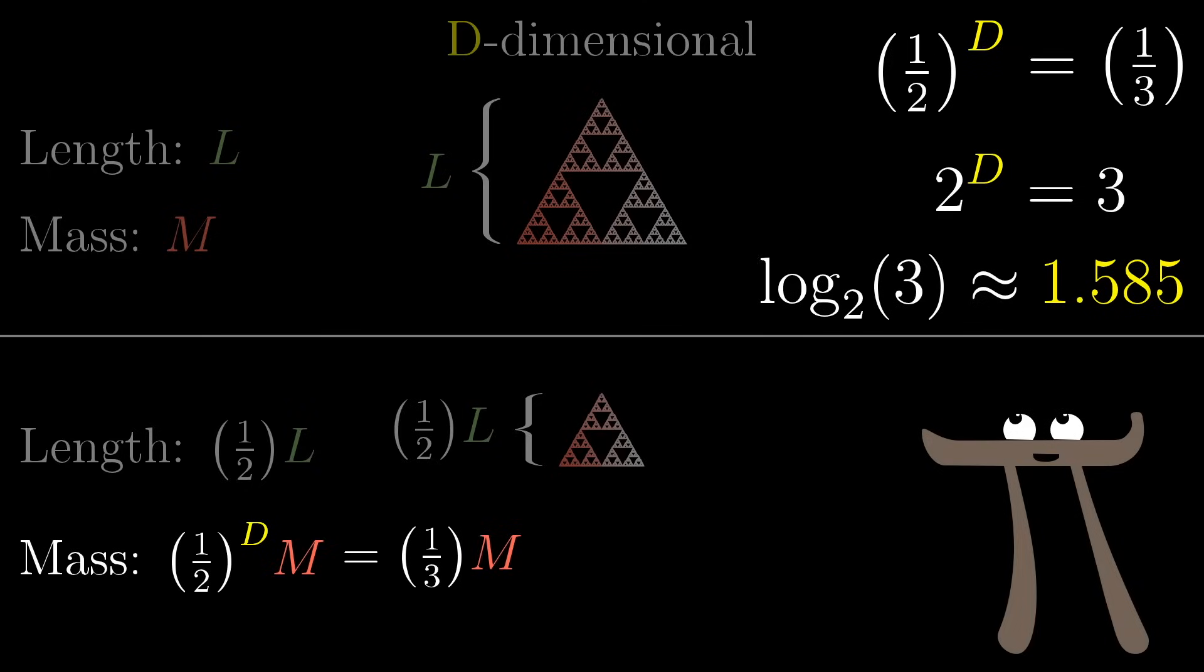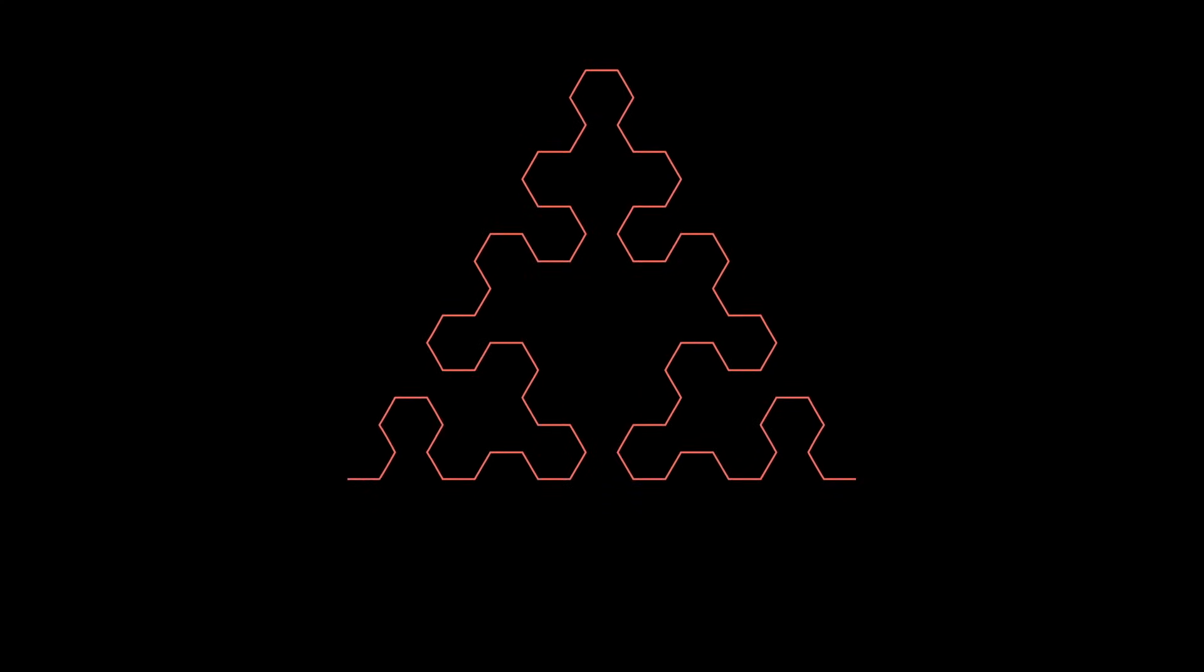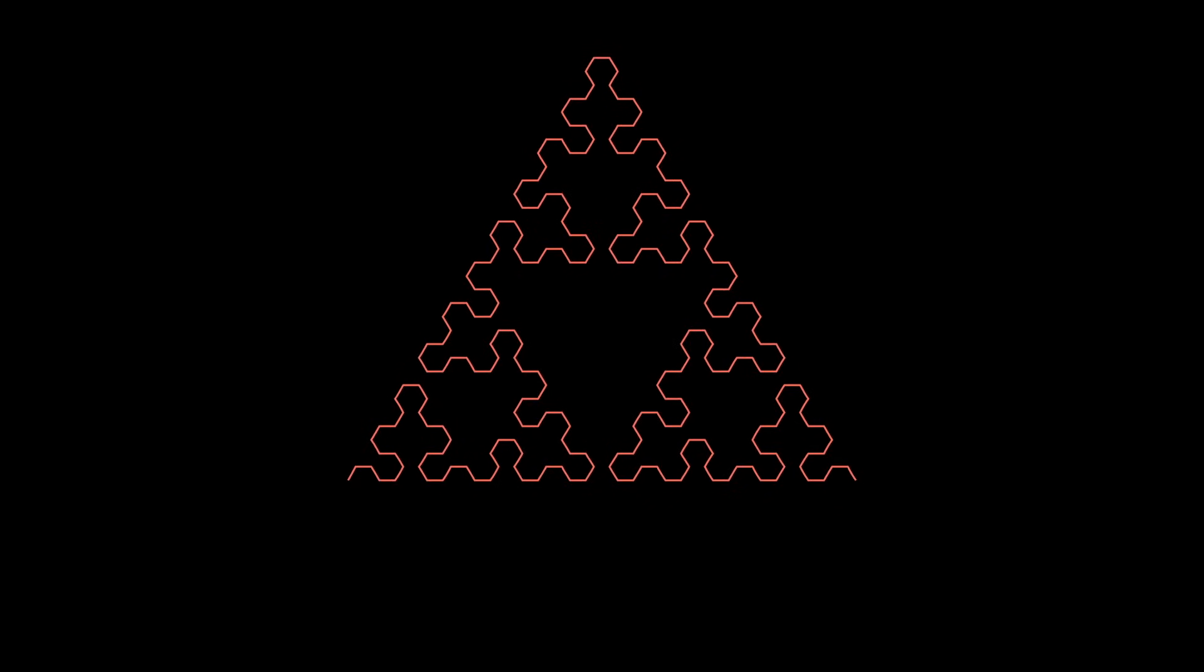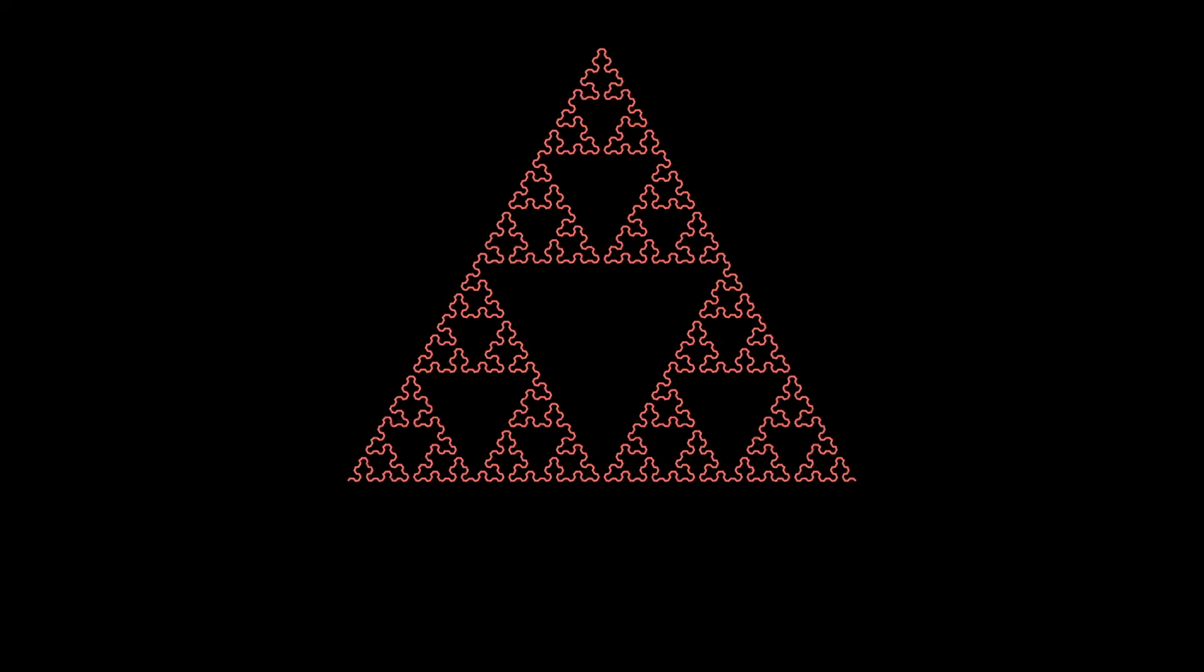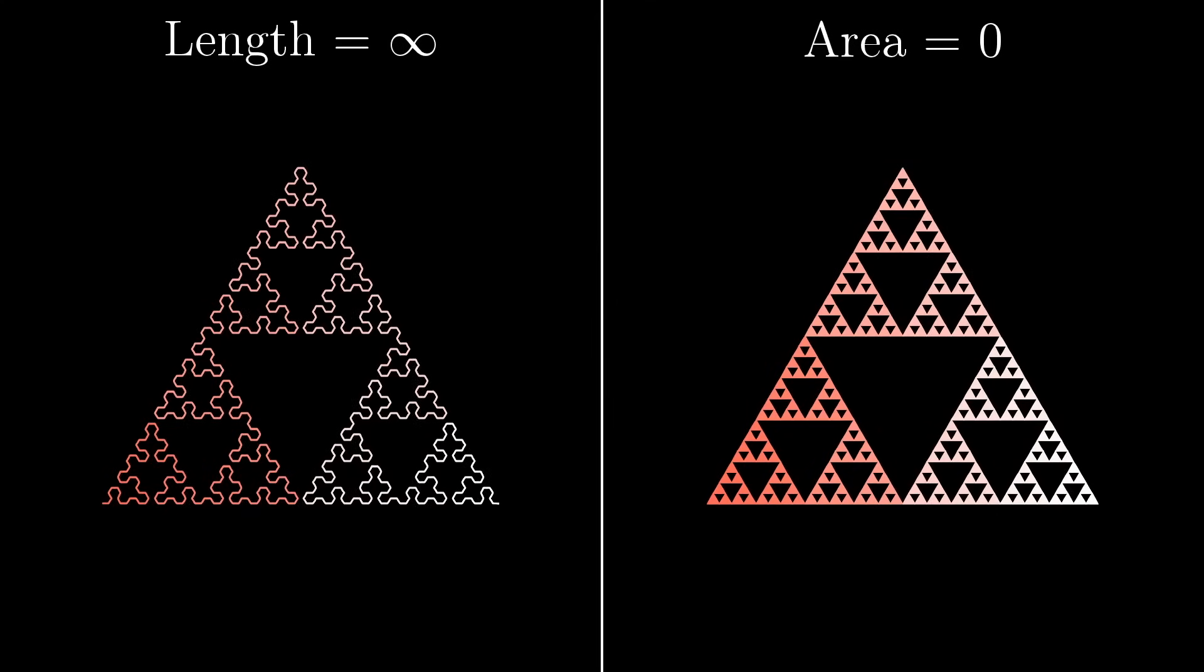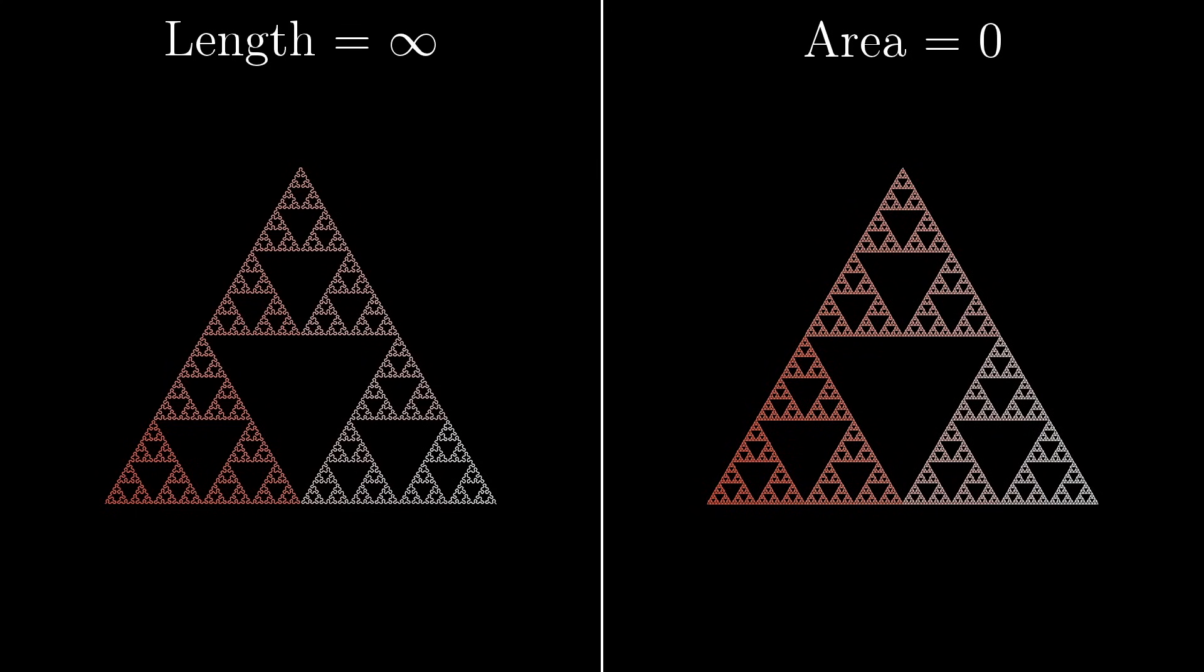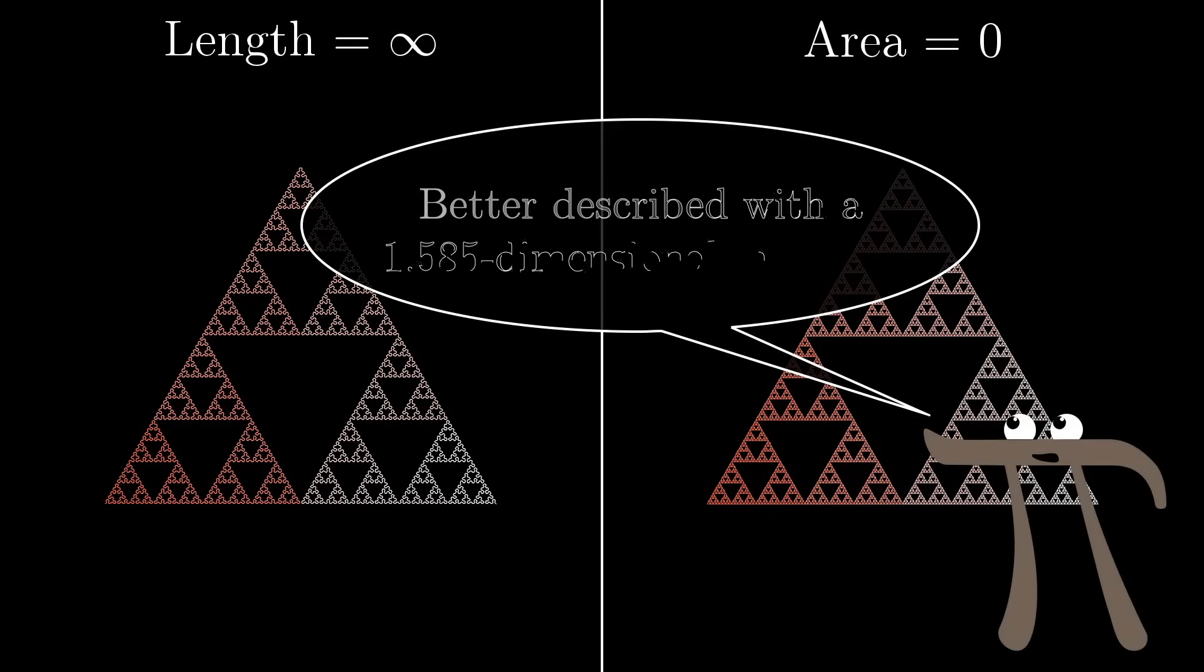So in this way, the Sierpinski triangle is not one-dimensional, even though you could define a curve that passes through all its points, and nor is it two-dimensional, even though it lives in the plane. Instead, it's 1.585 dimensional. And if you want to describe its mass, neither length nor area seem like the fitting notions. If you tried, its length would turn out to be infinite, and its area would turn out to be zero. Instead, what you want is whatever the 1.585 dimensional analog of length is.